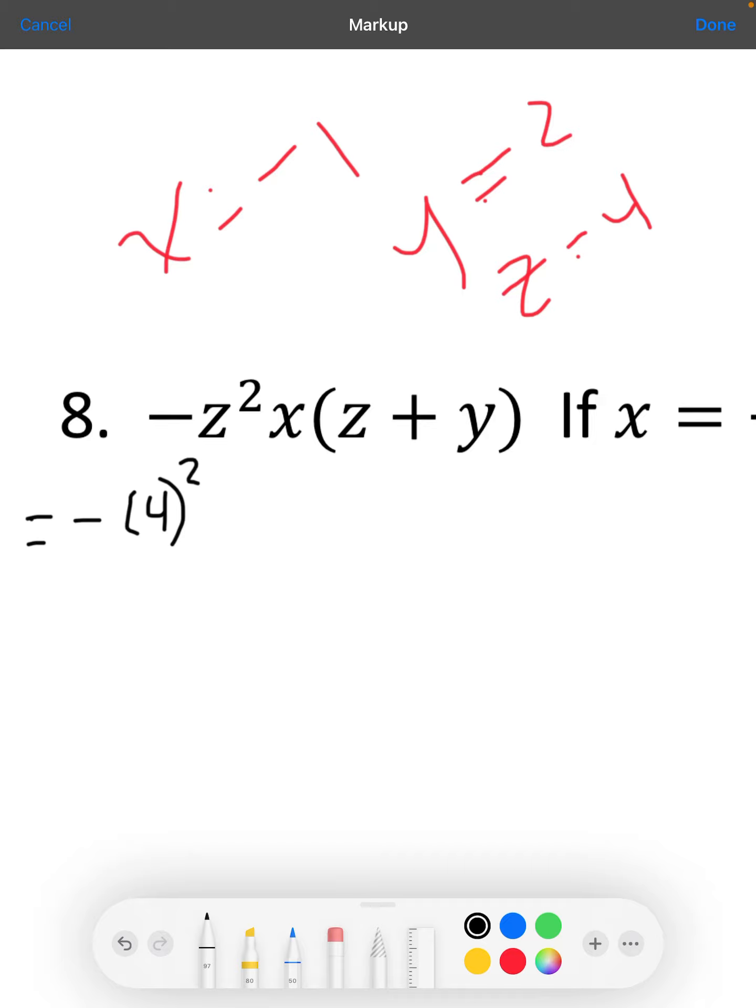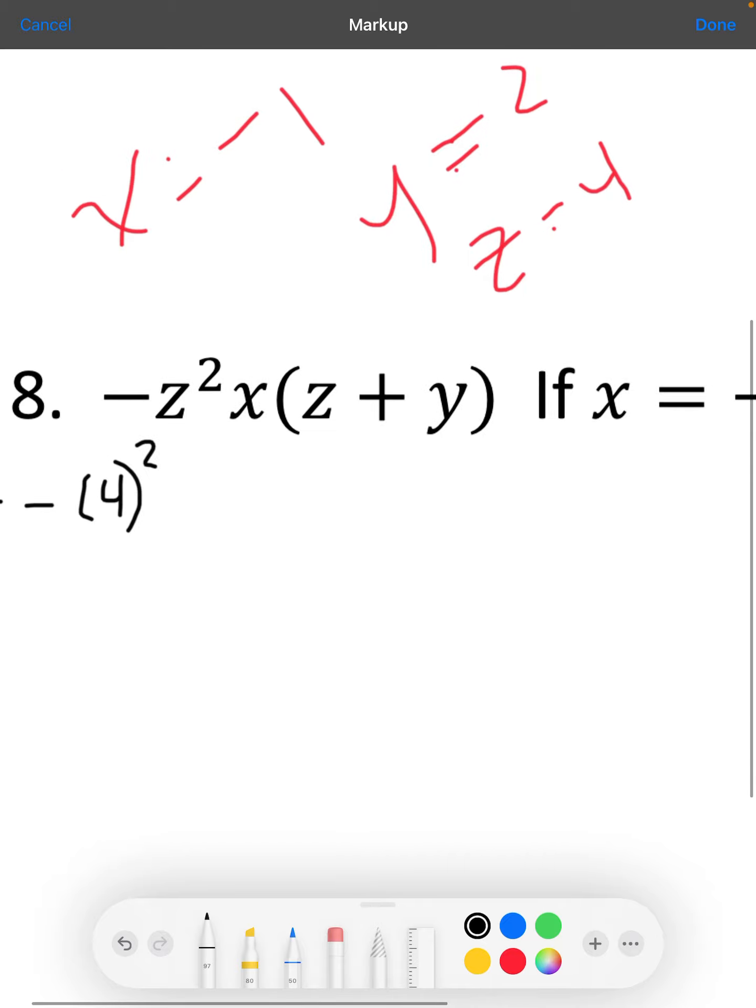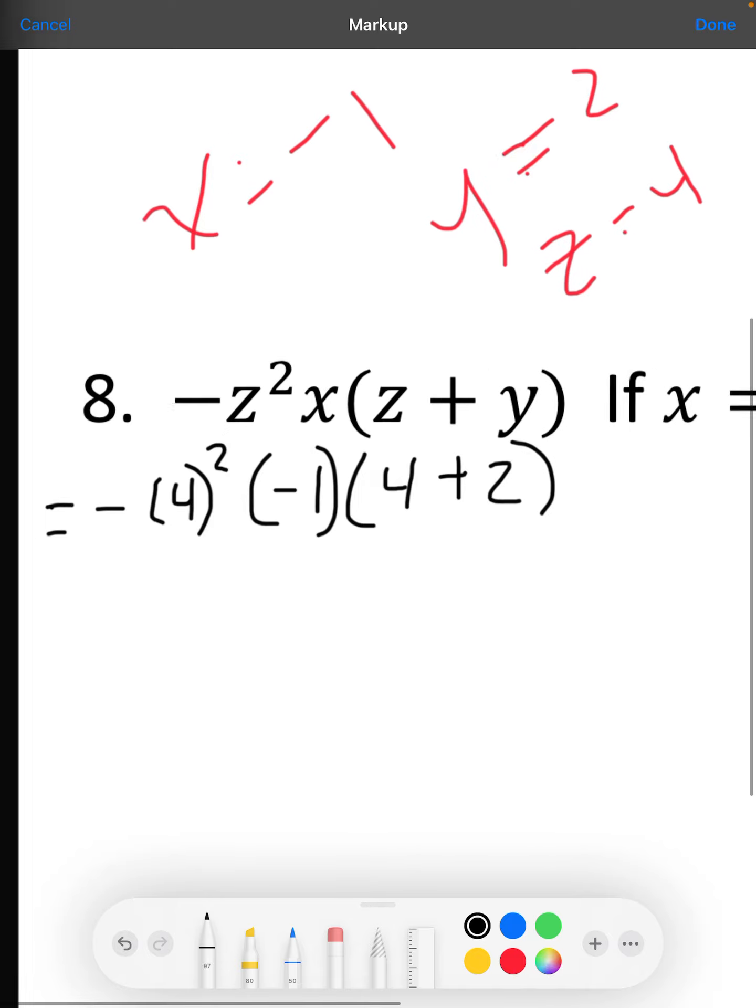I'm going to substitute in a negative 1 for x, and then substitute that 4 in for z again. If you want to put parentheses around the 4 when you're substituting it, you can. I'm just dropping them because it might look more confusing. Then I'm going to plug 2 in for y, and then we just have to follow order of operations.